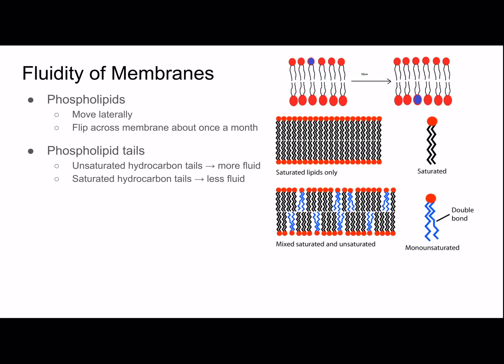Saturated hydrocarbon tails are able to pack together tightly, so there's less fluidity. But unsaturated hydrocarbon tails have a little bend in one of their tails because of a double bond, and that bend stops the membrane phospholipids from packing tightly, which makes the membrane more fluid.